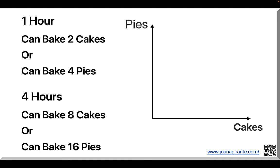Let's draw cakes on the x-axis and pies on the y-axis. This is arbitrary, and you could draw it the other way around too. In four hours, we can bake eight cakes if we don't make any pies. That's this point: eight cakes, zero pies.